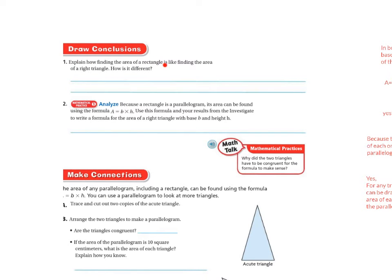Explain how finding the area of a rectangle is like finding the area of a right triangle. And how is it different? Well, in both cases, you're going to find the product of the base and the height. But for the triangle, you're going to find half of the product of the base and the height.